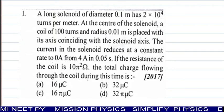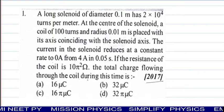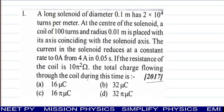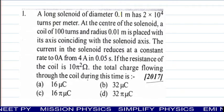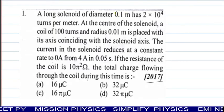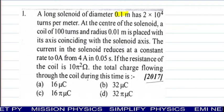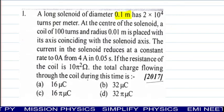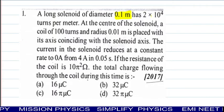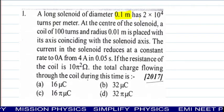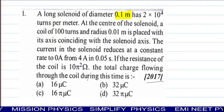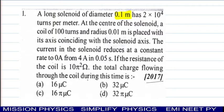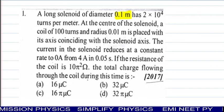In the first question which appeared in 2017, a long solenoid of diameter 0.1 meter. When you solve MCQ, you should encircle the given data statement-wise. Because in MCQ exam, there is no method to write given and to find, you have to save time. So I suggest you make circles on the given data.